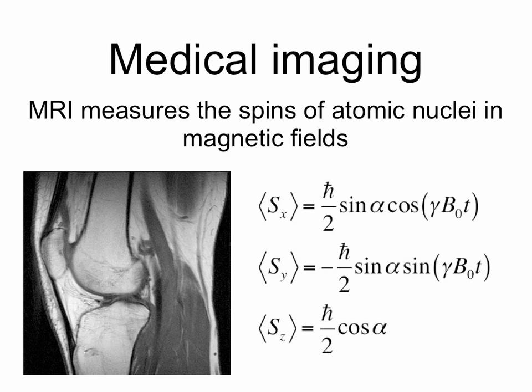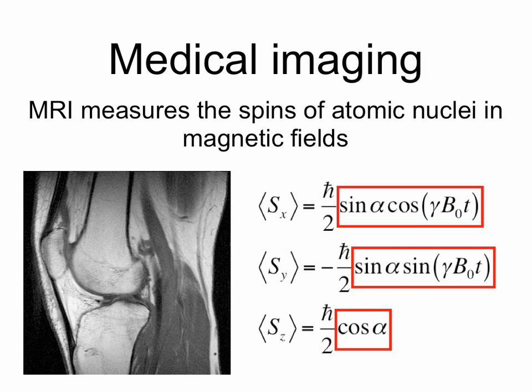Medical imaging is yet another example. Here's an MRI of a knee. MRI measures the spins of atomic nuclei in magnetic fields. Here are equations that describe how a spin rotates or precesses in a magnetic field, and there's plenty of trigonometry in that.